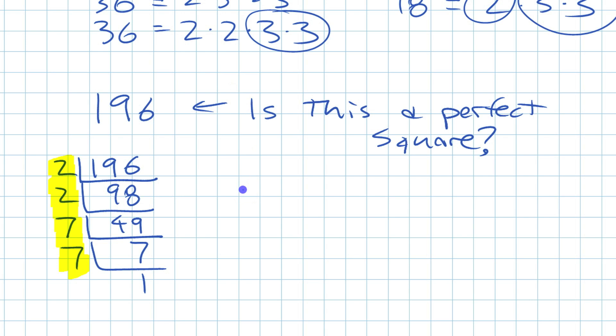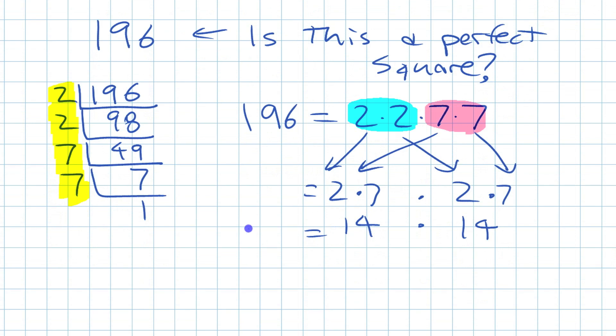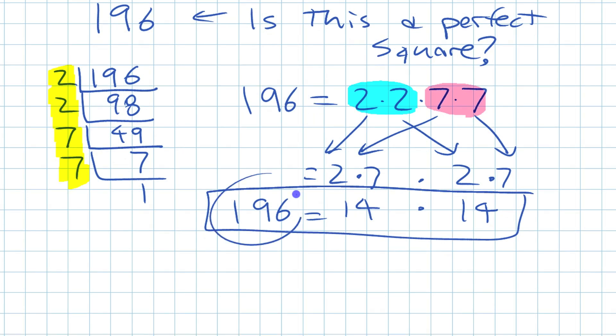So we can write 196 is 2 times 2 times 7 times 7. You have pairs of prime factors, right? There's a pair of 2s. There's a pair of 7s. So it's a perfect square. And if I arrange them the other way, if I put one of each of those pairs on either side, and I put the 7 over there and the other 7 over there, well, lo and behold, this is 14 and this is 14. 196 is 14 times 14. 14 is the square root of 196.